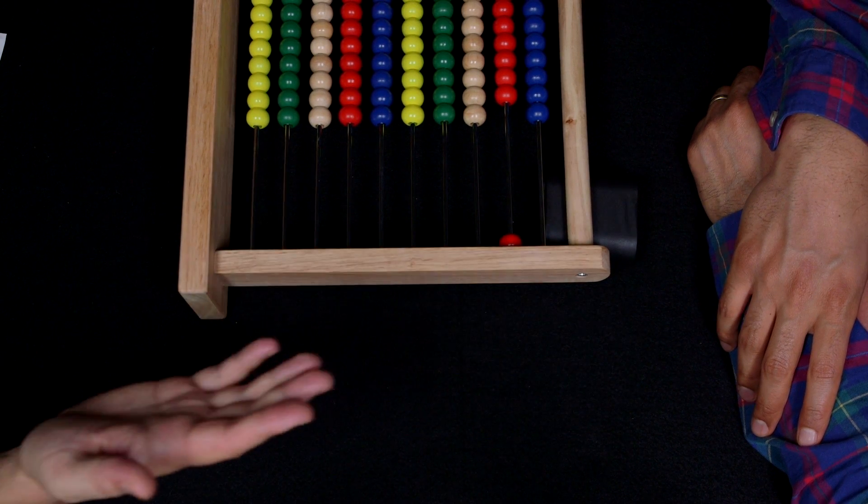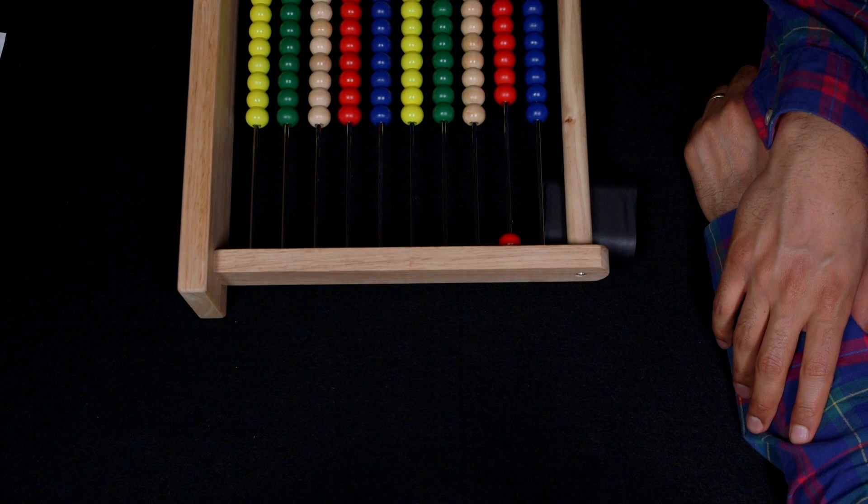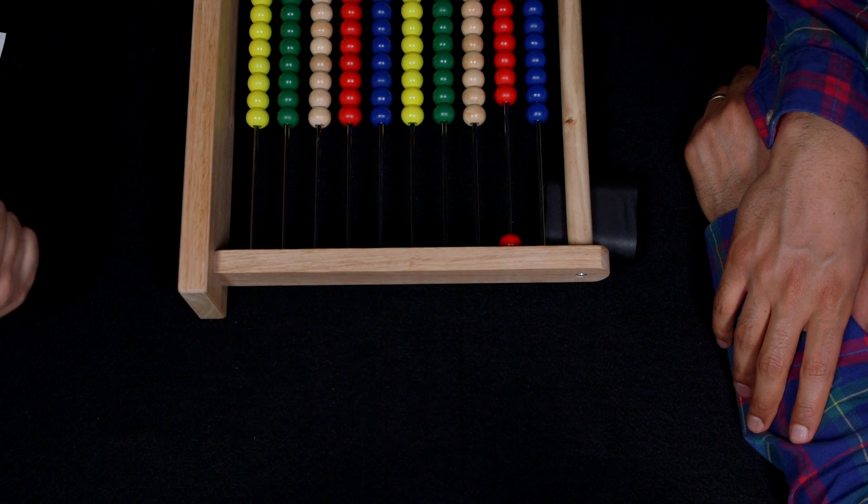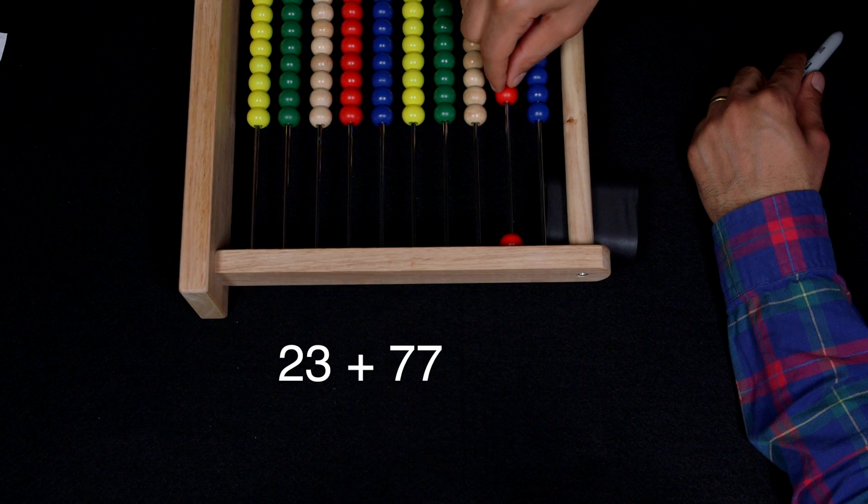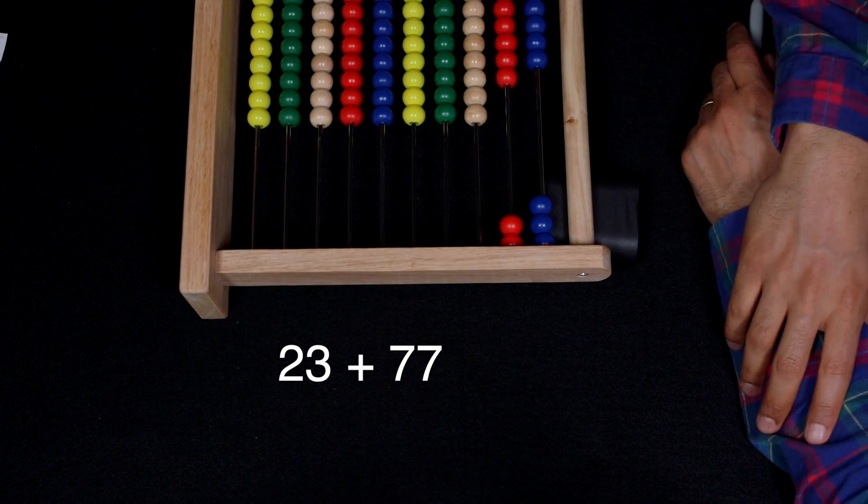So, let me give you a quick two-digit number. I followed that one. But this one is confusing. So, 23 plus 77. Alright. So, let's see. 23. That's 20. This is 23. 23 plus 77.